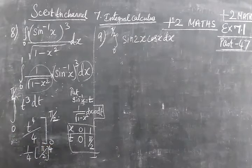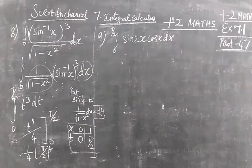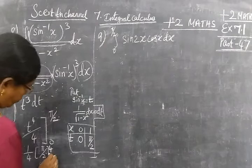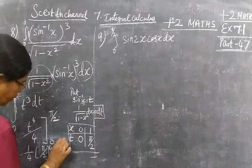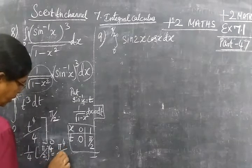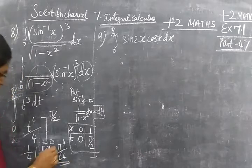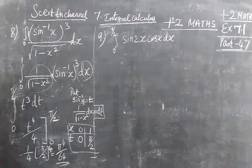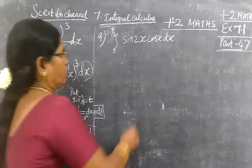Now we check the answer. The answer is 1/4. We have 2⁴ in the denominator. π⁴ by 64. 2⁴ is 16, 16 into 4 is 64.